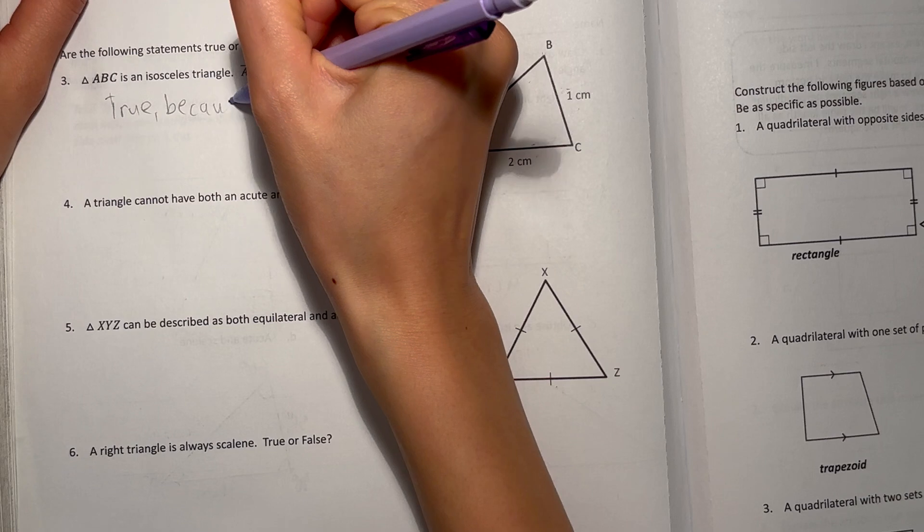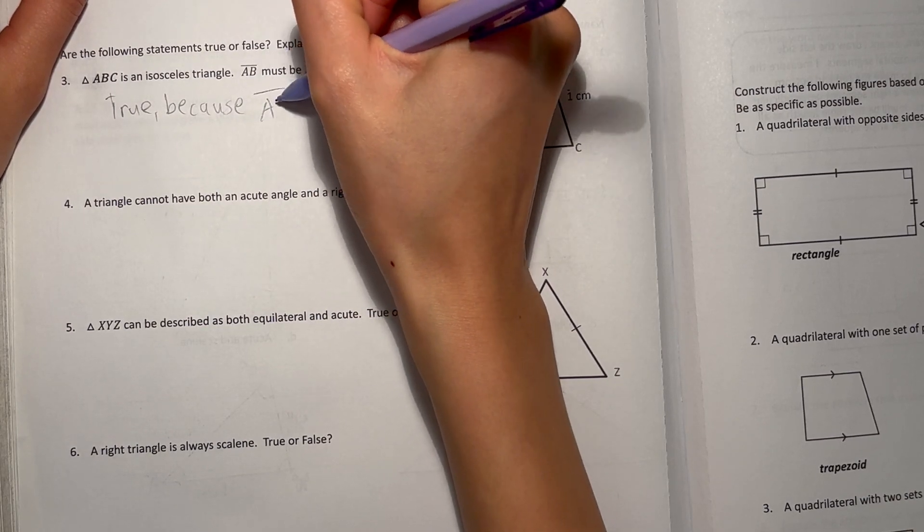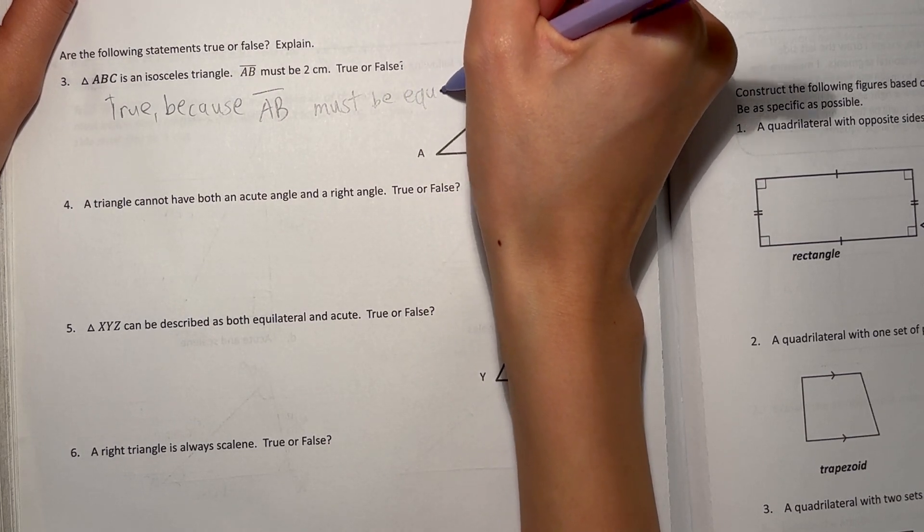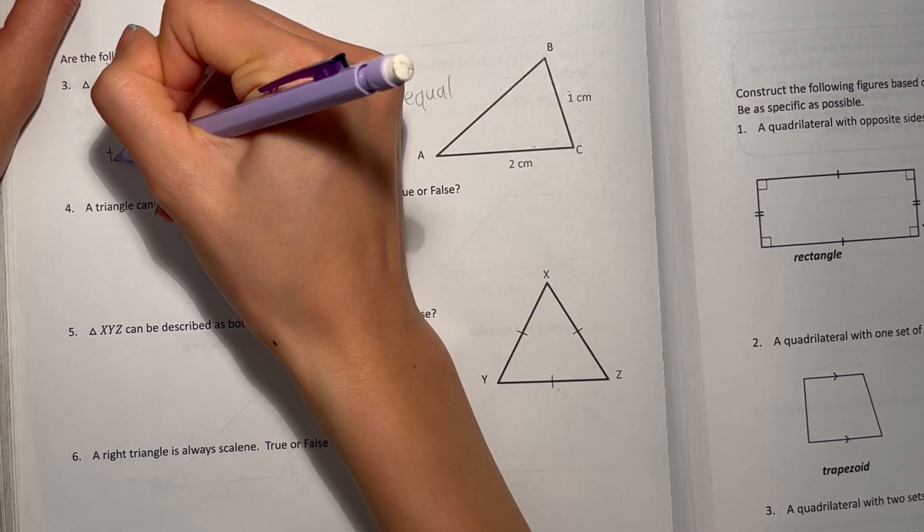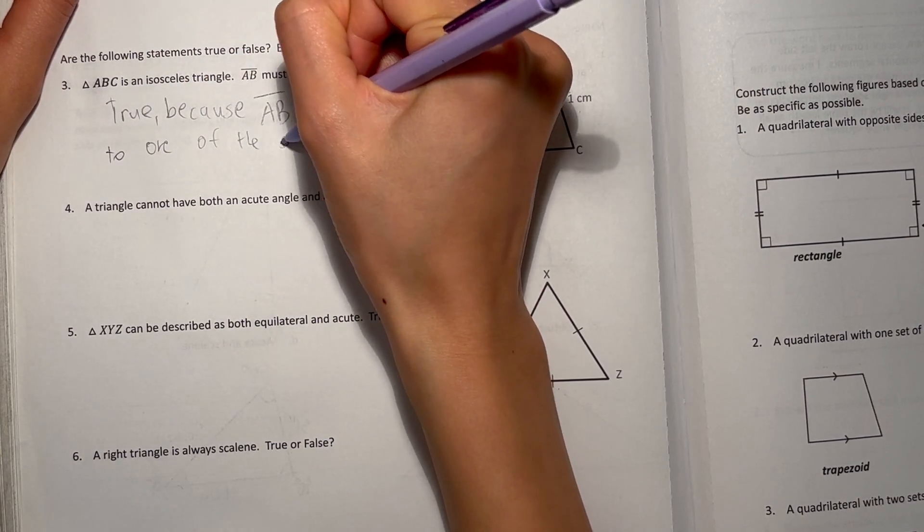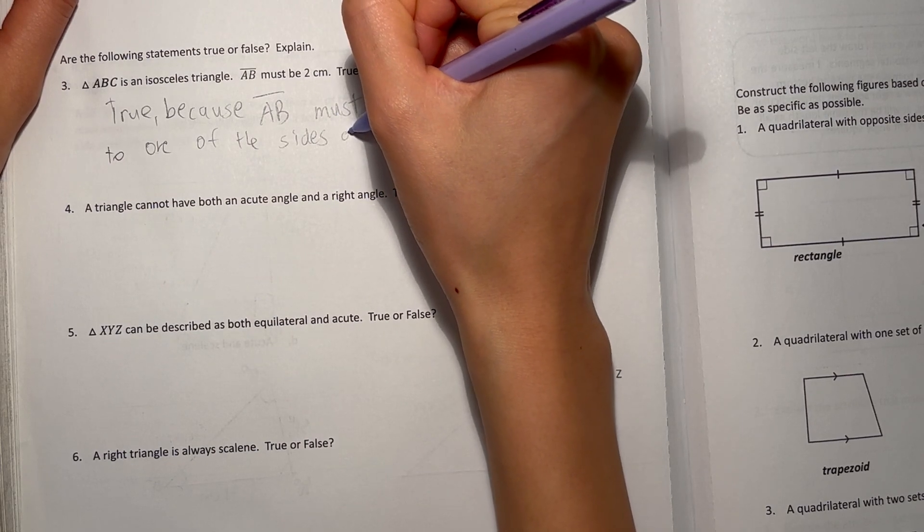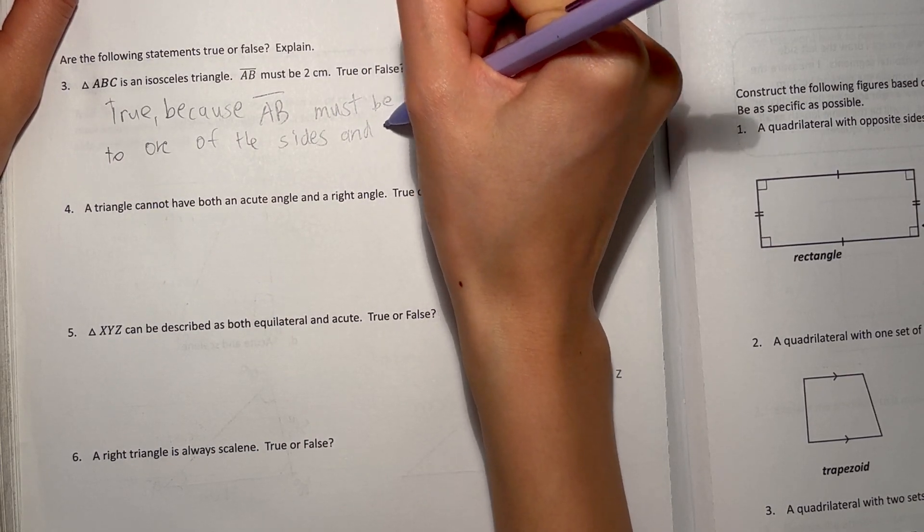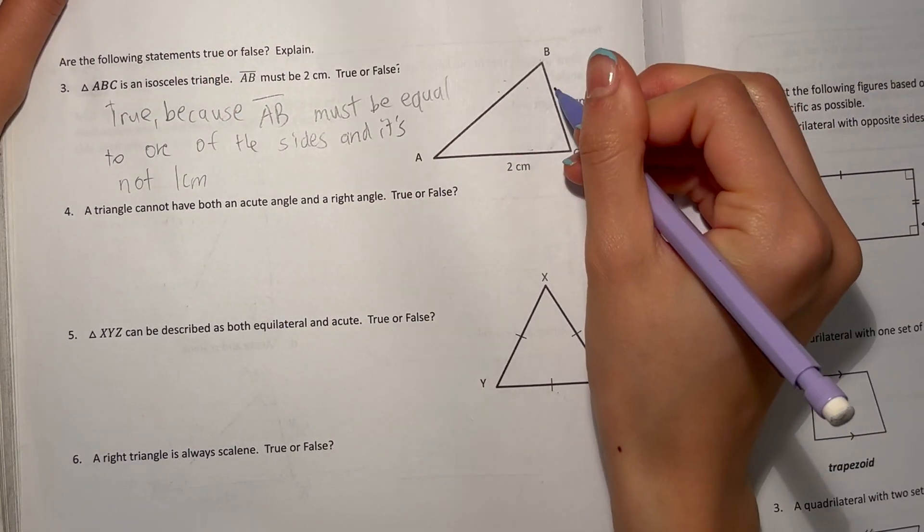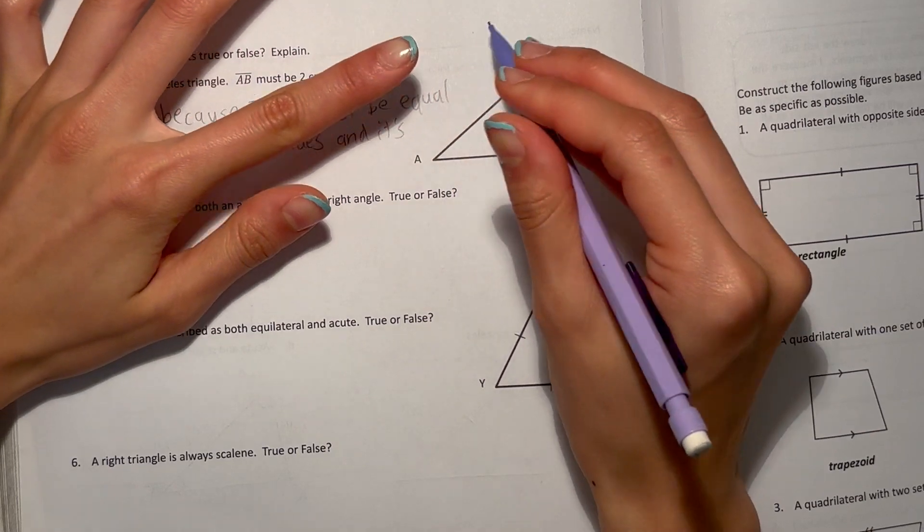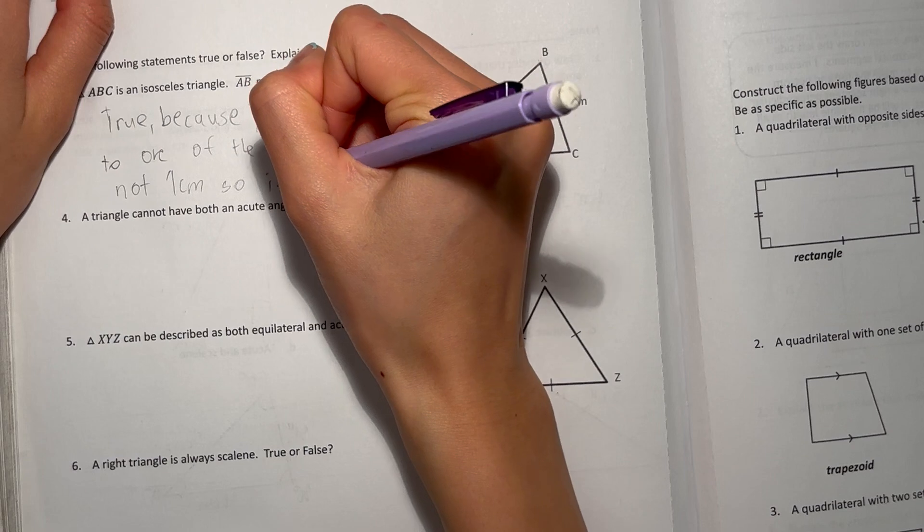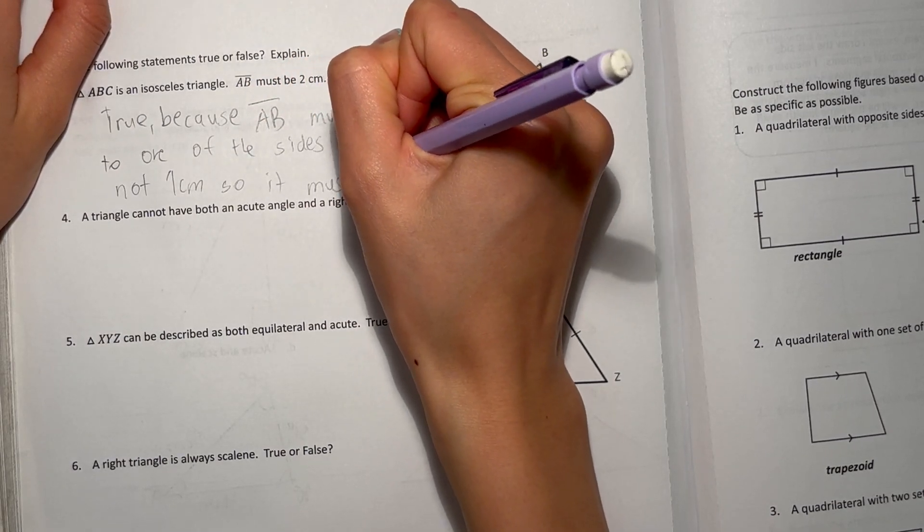Because AB must be equal to one of the sides, and it's not one centimeter because it's really... because they're both like on top, I can tell it's just not one centimeter. So it must be two.